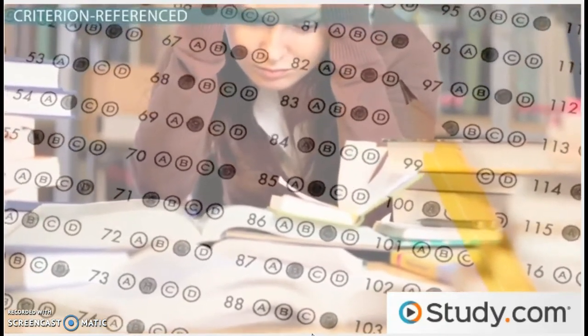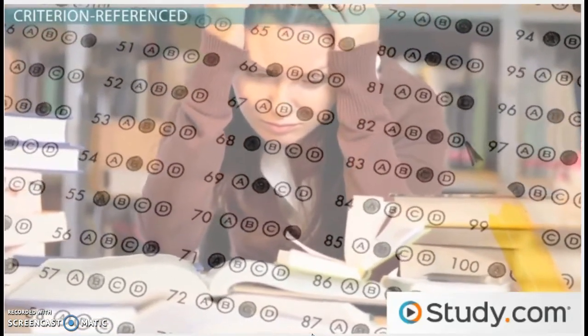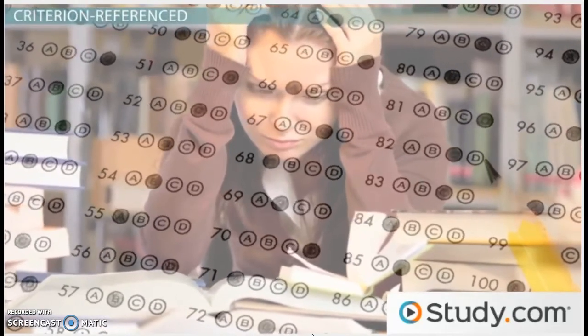As we mentioned, criterion referenced tests are good for giving an objective picture of how a person does. They are often seen as more fair than norm referenced tests, because how well the other people in the group do on the test doesn't affect your score.